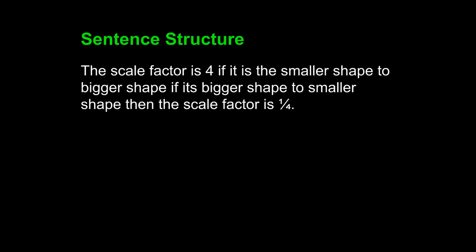Let's take another example from this same student writing. The scale factor is 4 if it is the smaller shape to bigger shape. If it's bigger shape to smaller shape, then the scale factor is 1 to 4. Obviously, this sentence is flawed. It is a run-on sentence, and we will fix that. But let's think about the nouns first — the subjects of the sentence.